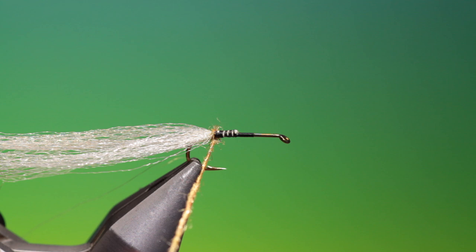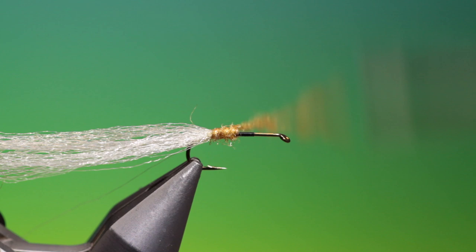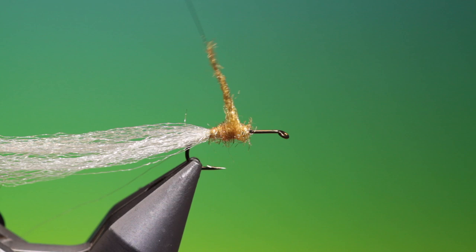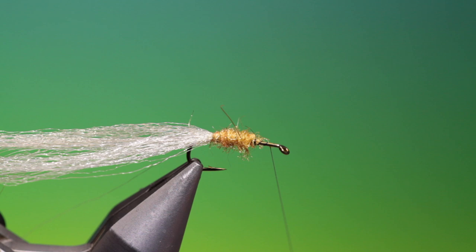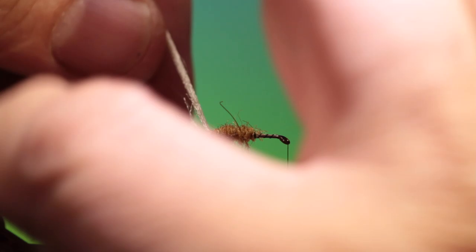Going over the body, we want a kind of swollen effect on the body here, and you don't want to go too far forward. That'll do us perfect there. So once you've tied that off, we want to go one, two, three, four open spiral turns to the hook eye.